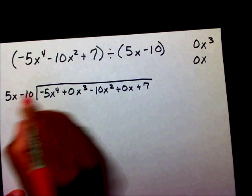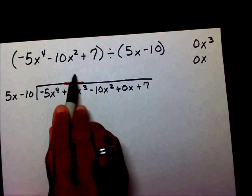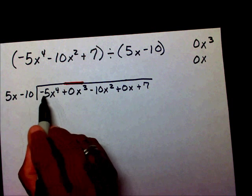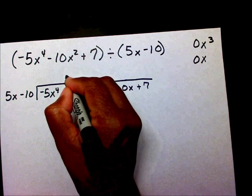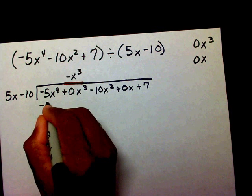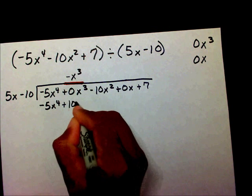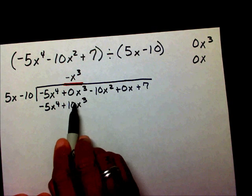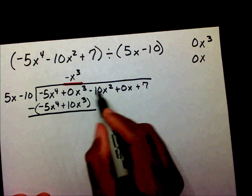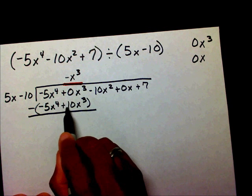Since it's a binomial, I'm going to go to the second position of my polynomial — this is where I write my first number. What number times 5x will give me negative 5x to the 4th? That's going to be negative x to the 3rd. Negative x to the 3rd times 5x is negative 5x to the 4th. Negative x to the 3rd times negative 10 is a positive 10x to the 3rd. If I didn't place this 0x to the 3rd in this position, then this negative 10x squared would be in this position, and I would have to subtract negative 10x squared plus 10x cubed — and that can't be done.